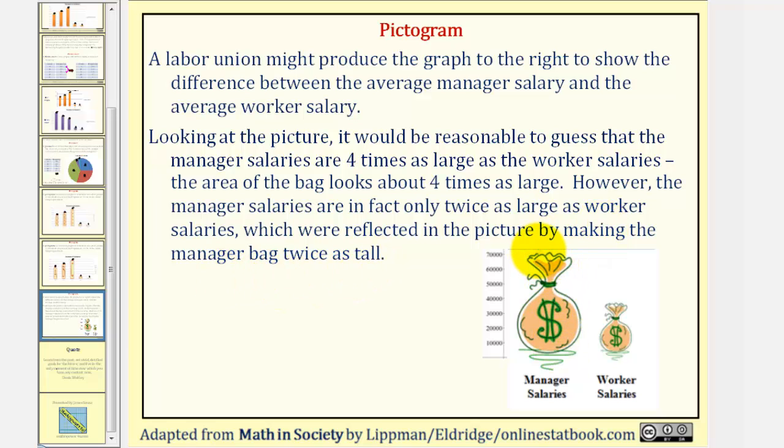So here this pictogram can be deceptive, unless you pay close attention to the height of each of these, rather than their size. Looking at the scaling on the axes, notice how this larger bag is twice as tall as this smaller bag, representing the salaries are only twice as large, not four times as large. Okay, that's going to do it for this lesson. I hope you found this helpful.